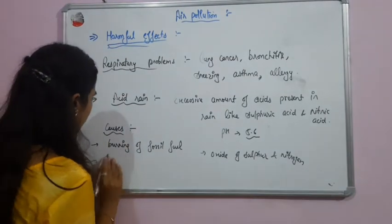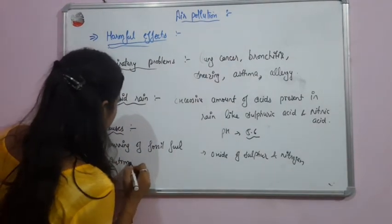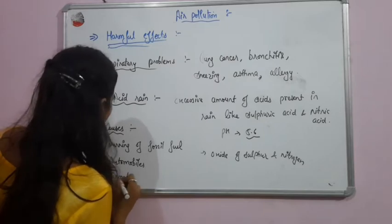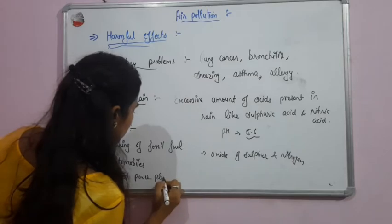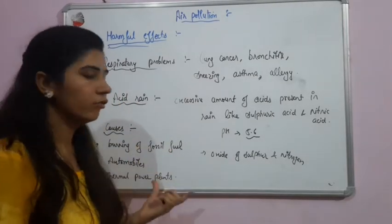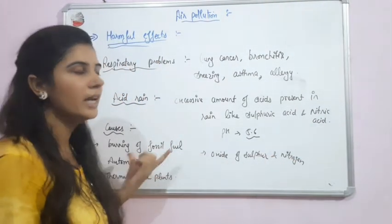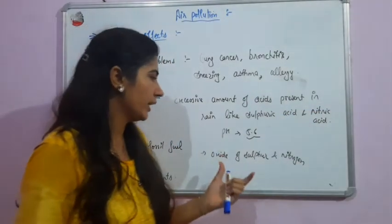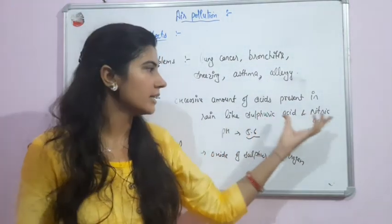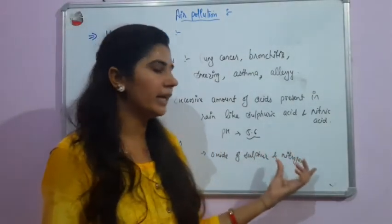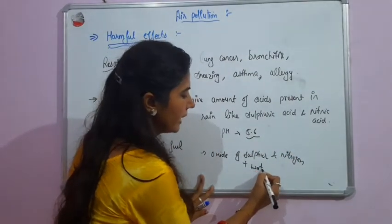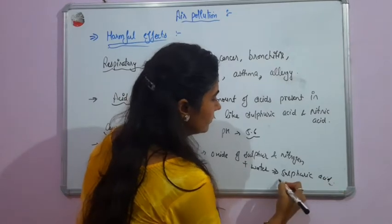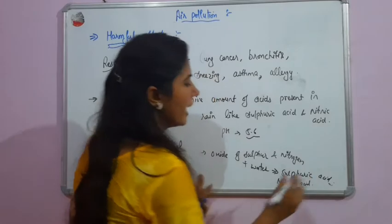Another cause of acid rain is automobiles, which also release harmful gases — oxides of sulfur and nitrogen. When oxides of sulfur and nitrogen react with water, they form sulfuric acid and nitric acid, which is why we have acid rain.